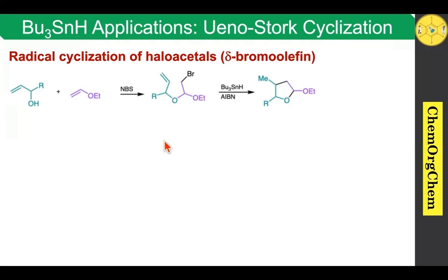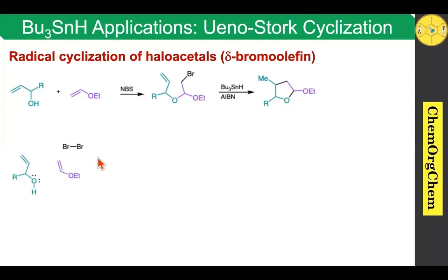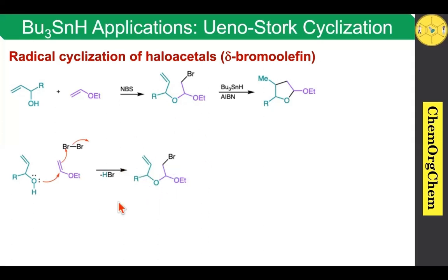Let us see mechanistically how this reaction takes place. Initially, allylic alcohol and electron-rich alkene and bromine molecule react together to produce halo acetal or bromoacetal. In this particular case, NBS produces this bromine molecule in low concentration. Initially, the oxygen has two lone pairs of electrons, which readily attacks this center, then followed by the terminal position electrons which attack the bromine molecule, then followed by kickoff of Br-ion, which produces the corresponding bromoacetal along with HBr.